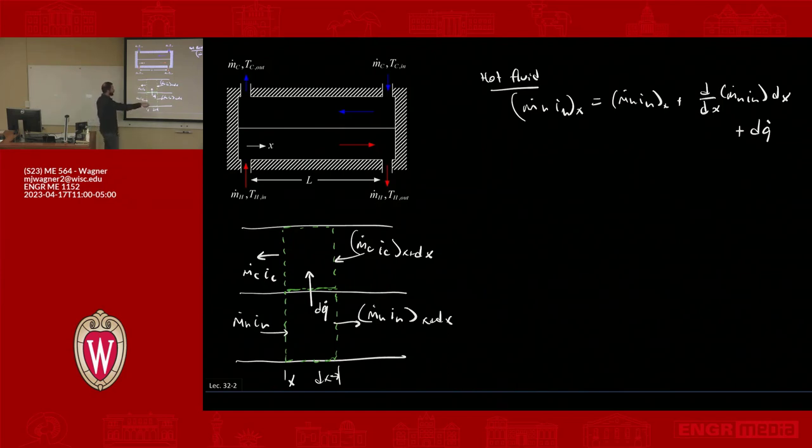So we can cancel out some terms, this cancels with this, and we end up with zero is equal to M dot H D I H D X times DX plus DQ dot.